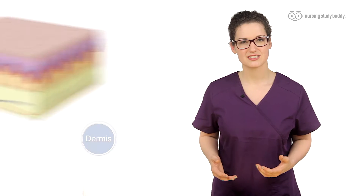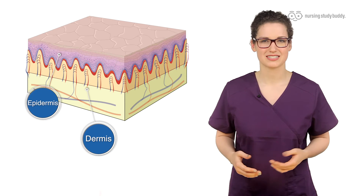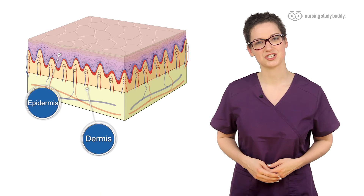The subcutaneous route is administered under the cutis, or below the dermis and epidermis. It's often used for insulin injections, because only a small amount of medication is supposed to be injected between the muscle and skin.